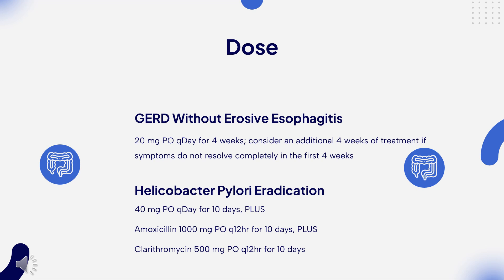Follow IV therapy with oral acid suppressive therapy. Frequent heartburn (OTC): 20 mg PO once daily for 14 days. Hepatic impairment — oral administration: mild to moderate (Child-Pugh B): no dosage adjustment required. Severe (Child-Pugh C): not to exceed 20 mg per day. For bleeding gastric or duodenal ulcers: no dosage adjustment required with initial 80 mg/30-minute dose. Adjust dose for continuous infusion: mild to moderate (Child-Pugh B): not to exceed 6 mg per hour; severe (Child-Pugh C): not to exceed 4 mg per hour.